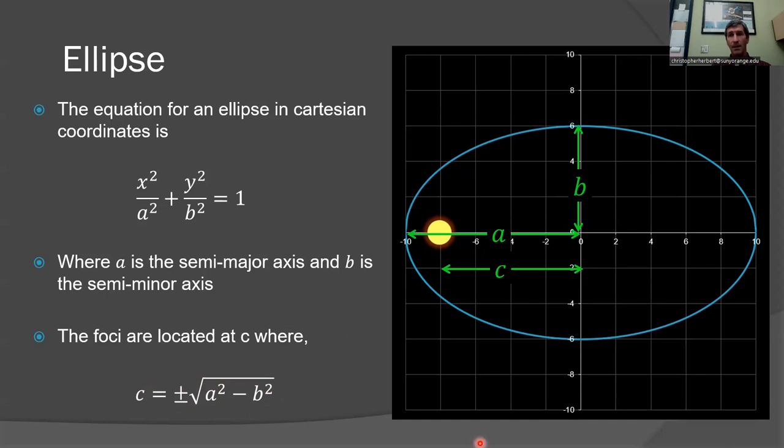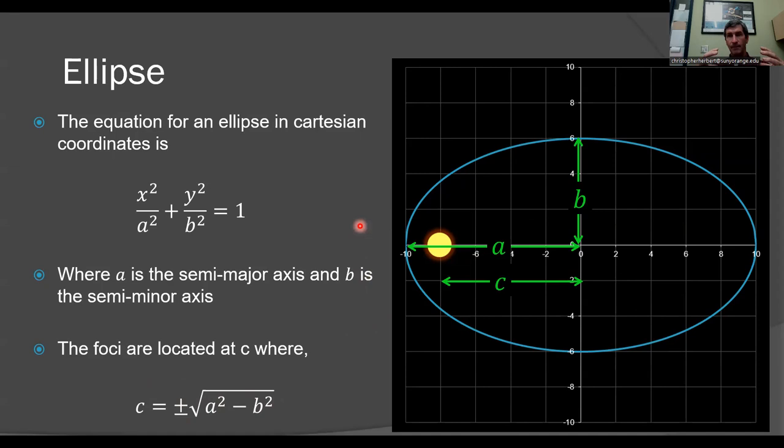So for a perfect circle, we only have one focus, the very center. But as A and B become more different, C, the distance between the center of the ellipse and the focus becomes greater and greater.